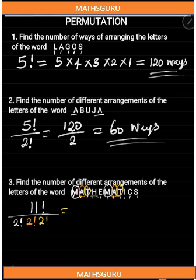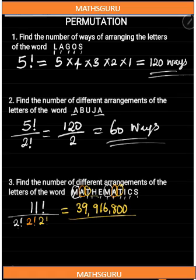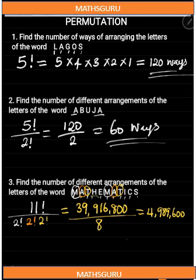So our answer is equal to 11 factorial, which gives us 39,916,800. When we divide it by two factorial times two factorial times two factorial — which is two times two times two, giving us eight — that gives us four million, nine hundred and eighty-nine thousand, six hundred. So the letters of the word Mathematics can be arranged in 4,989,600 ways.